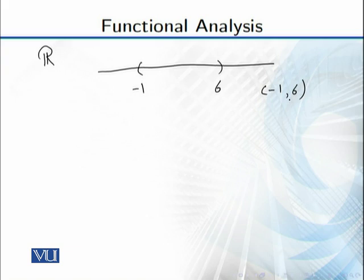Let's look at the metric space. The condition is that you get an open ball at every point. In this case, it is not basically a ball — you have an open interval. For example, if I have a point here, you will get an open interval. That means that you have an internal point, and the condition will automatically be satisfied.